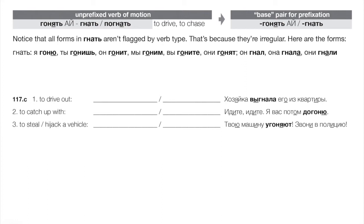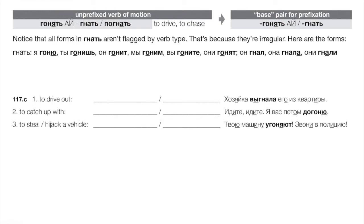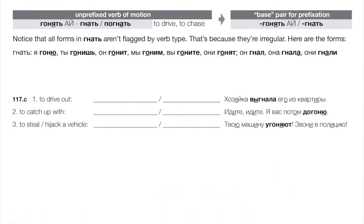To catch up with someone — догонять/догнать — that's catching up by chasing. Example: идите, идите, я вас потом догоню — go on ahead, I'll catch up with you later. To steal or hijack a vehicle is угонять/угнать — literally to drive far away or chase far away. Perhaps going back to horse thievery. Example: твою машину угоняют, звони в полицию — they're stealing your car, call the police.